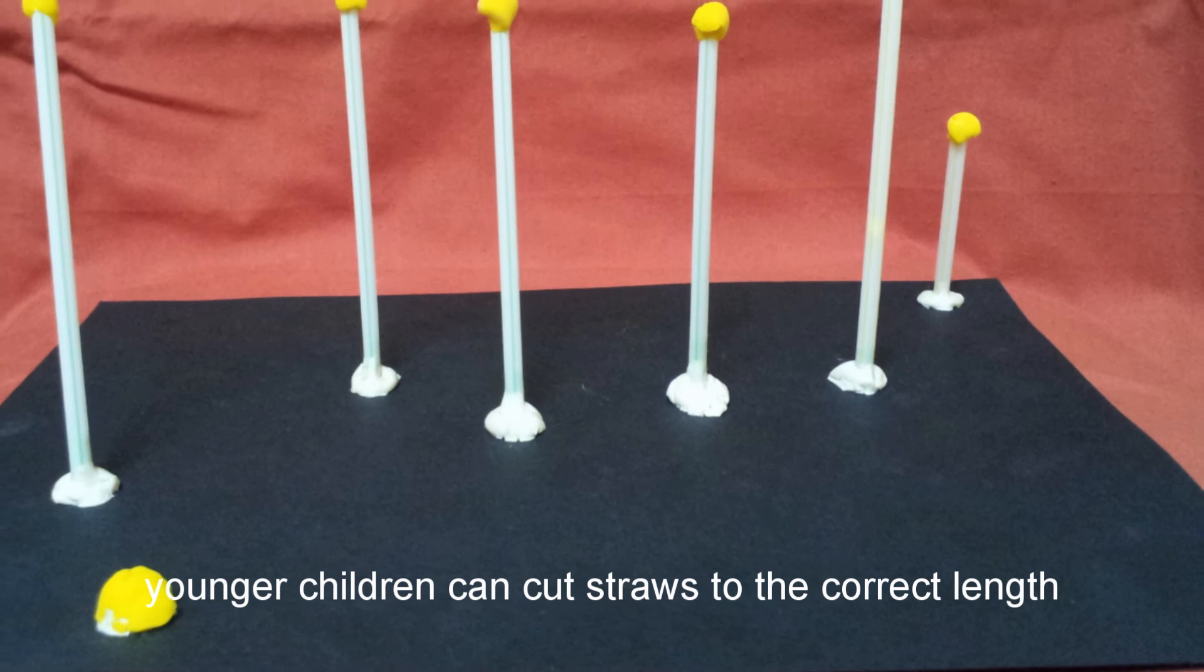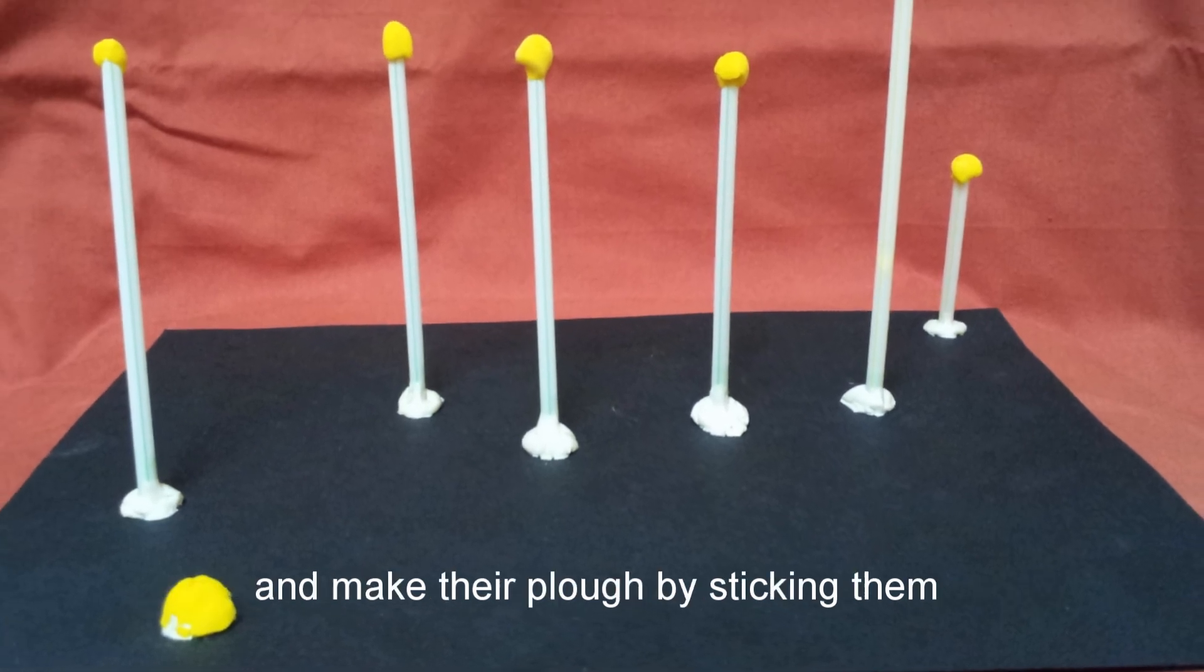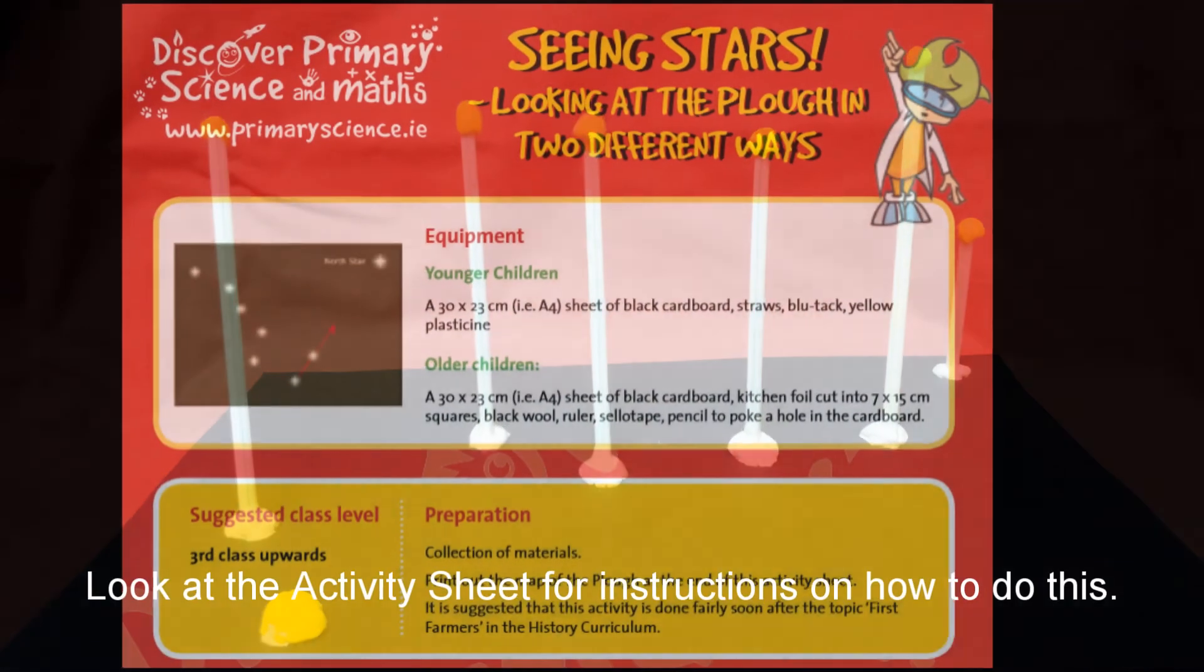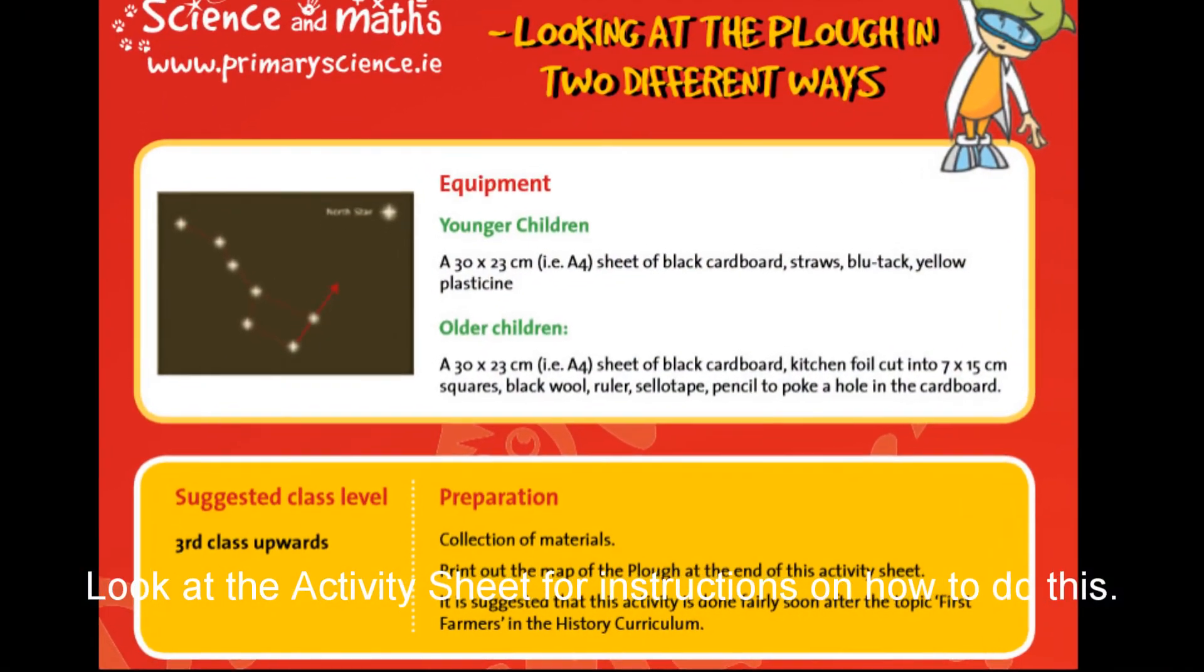Instead of using wool, younger children can cut straws to the correct length and make their Plough by sticking them to the chart using blue tack. Look at the activity sheet for instructions on how to do this.